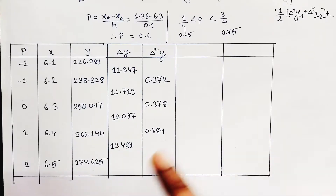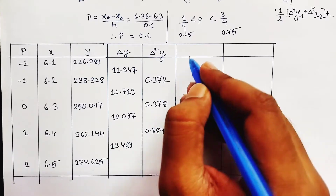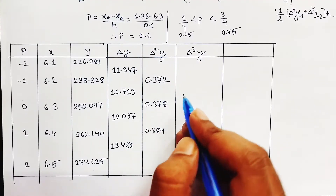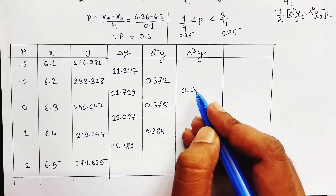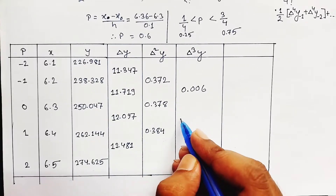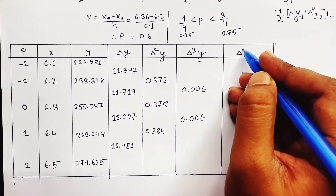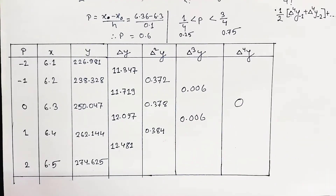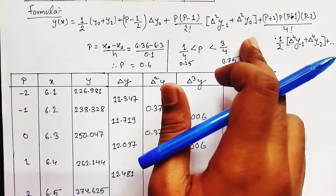We continue until we get a single value in each column. For Δ³y, subtracting successive Δ²y values gives 0.006 and 0.006. For Δ⁴y, subtracting those two values gives 0. So the fourth-order difference is zero.